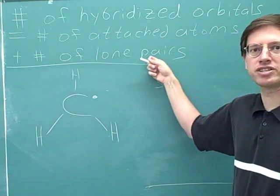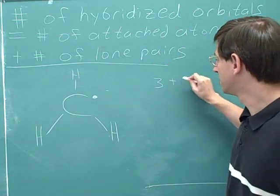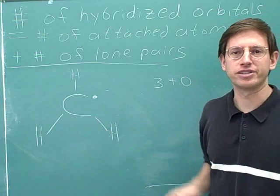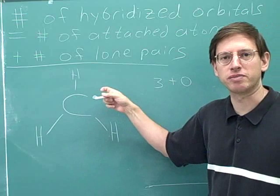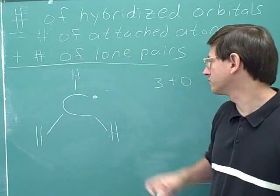And how many lone pairs are there? Well, zero. There are no lone pairs on this carbon. This is not a lone pair because it's an unpaired electron. That's what it means to be a radical. So there are no lone pairs.